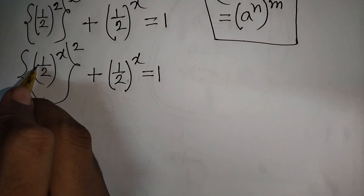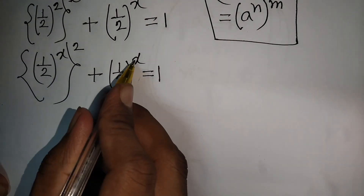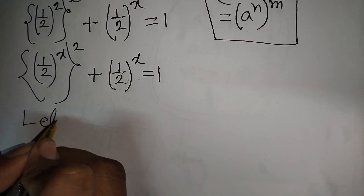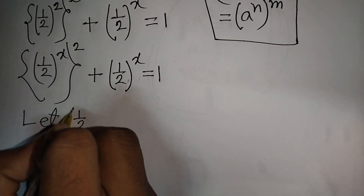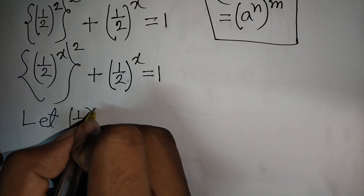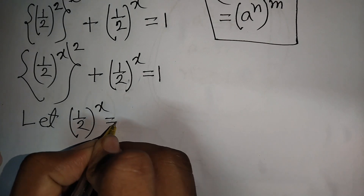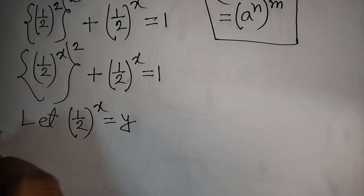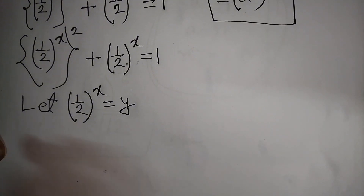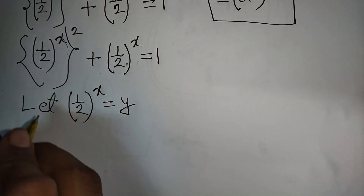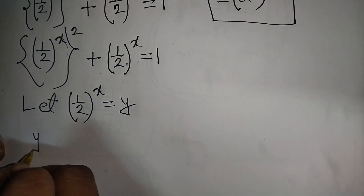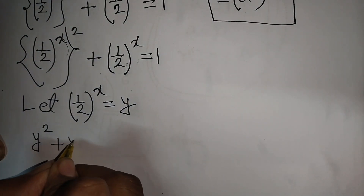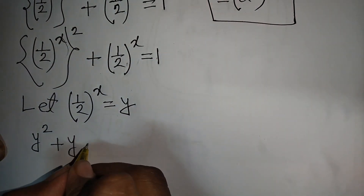We see that (1/2) to the power x appears in both terms. Let us substitute (1/2) to the power x as y, so our equation becomes y squared plus y is equal to 1.